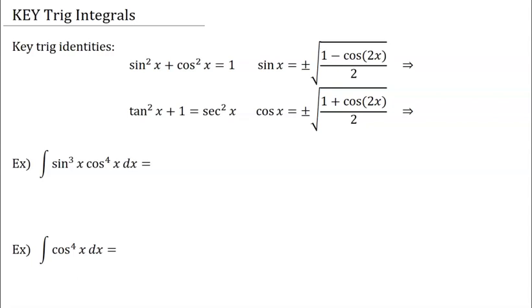Sometimes when we are evaluating integrals, we have trig functions that show up with multiplicities. If that's the case, sometimes we have to use trig identities to rewrite those. These are trig identities that we know: we know the Pythagorean identities, and there are three of them — I'm just listing two of them here, and we should know what the third one is. And then also, these are the half-angle identities.